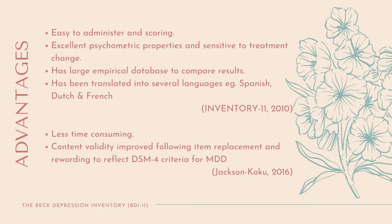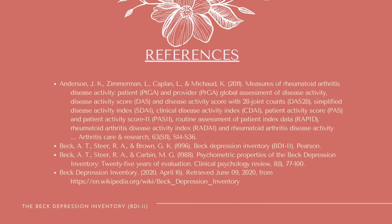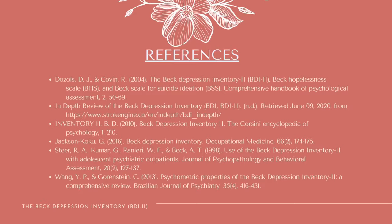The advantages of the BDI-2 assessment: it is easy to administer and score, has excellent psychometric properties, and is sensitive to treatment change. It has a large empirical database to compare results and has been translated into several languages. The assessment requires less time to complete and content validity is improved following item replacement. However, it is not comprehensive enough to provide conclusive diagnostic information, it is potentially inaccurate in some item statements, and there is instability of scores over time even among non-clinical samples. A fee is required for the manual and record forms, and it is designed to be administered by a trained administrator.